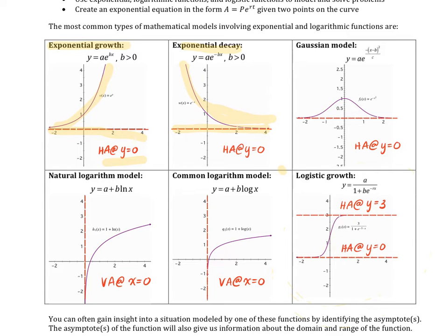Down here you've done natural logarithm and common logarithm. If you have a logarithm, you have a vertical asymptote instead at x equals zero, and then it increases as x increases. Same thing here, vertical asymptote of x equals zero. So the two new ones are this Gaussian model and the logistic growth.